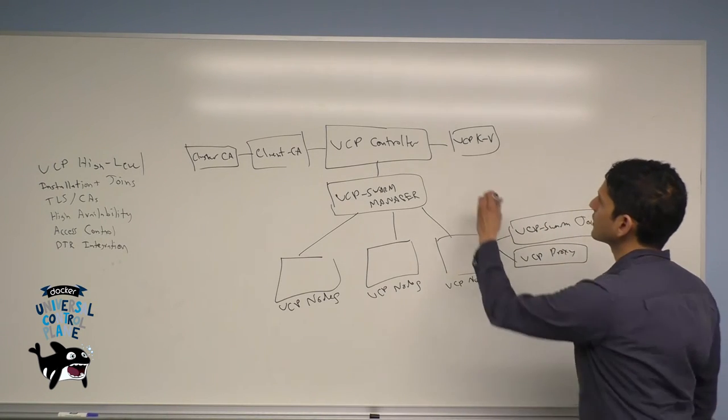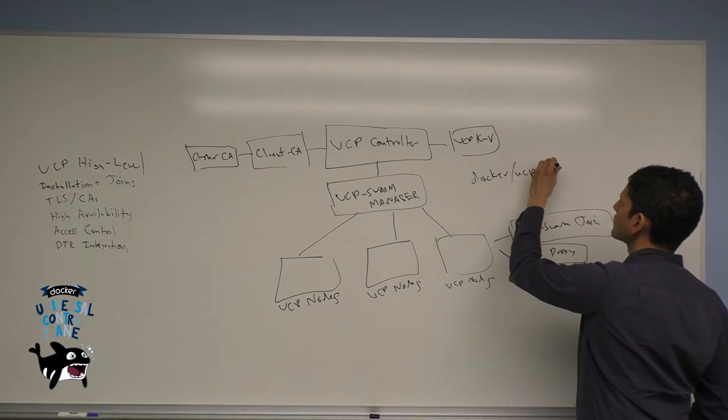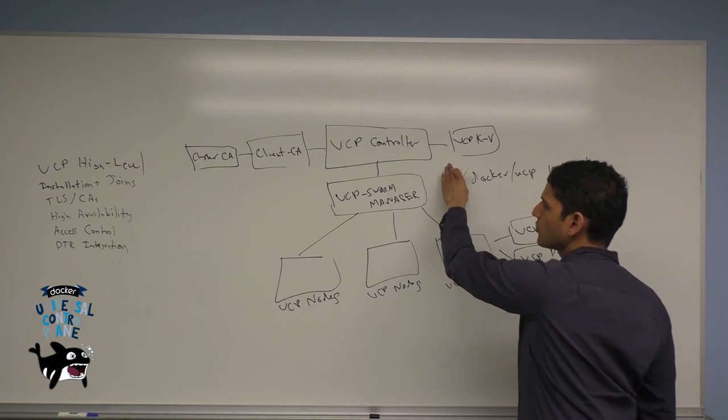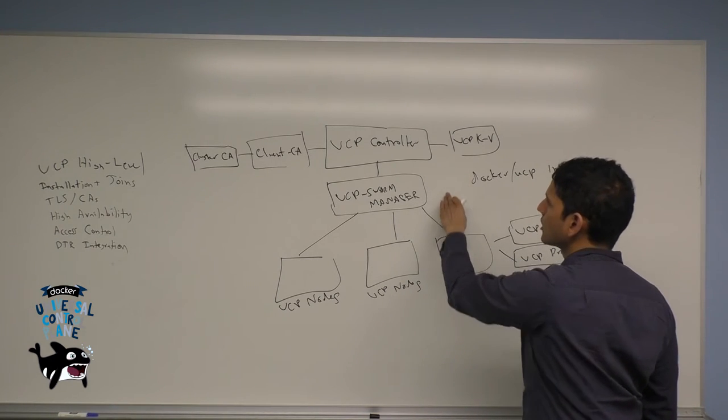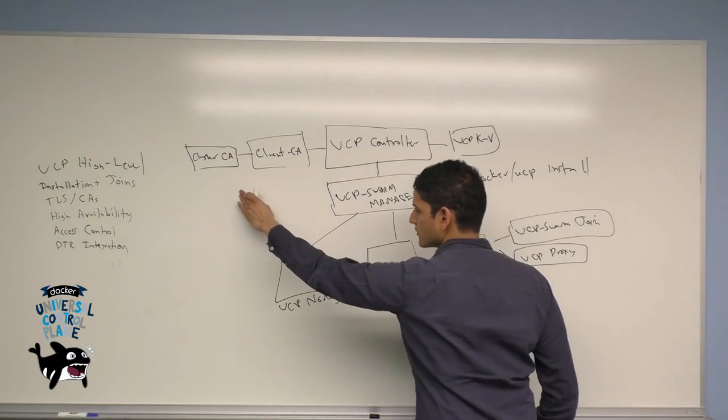So you run docker slash UCP install, and you can find the details for this process online. This process causes the UCP controller to be installed on your host, along with the swarm manager, the key value store, as well as the client CA and the cluster CA.